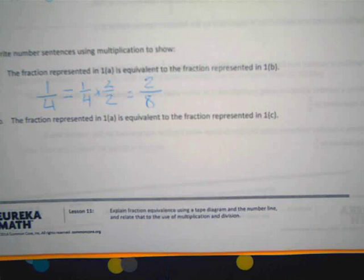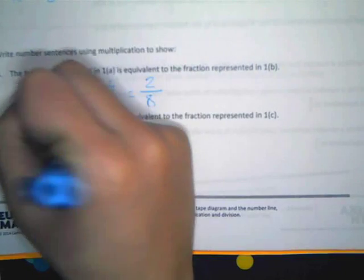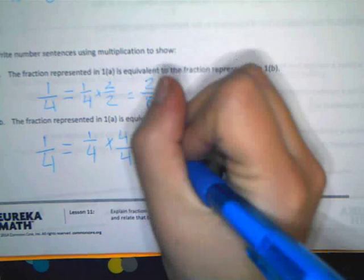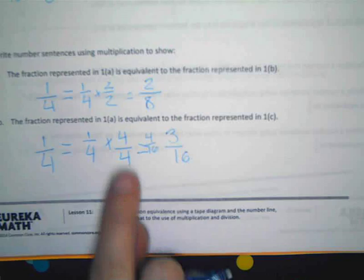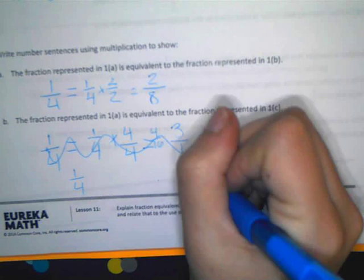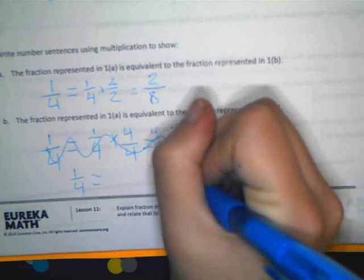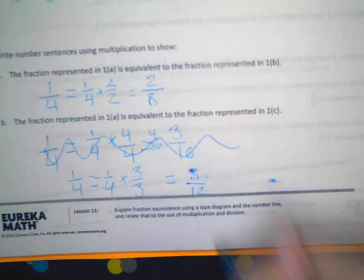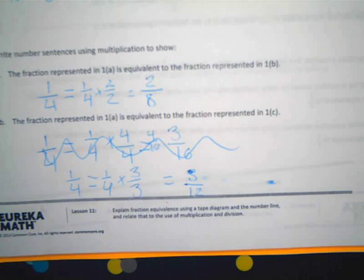What happens from here to here? So I start with one fourth and you said that equals two eighths. So I agree, but how can I prove that right in the middle here? Yeah, we're just going to multiply it times two. I'm going to times top by two and bottom times two, and that gives us two eighths. And this is where it gets tricky because you'll see here in a second. I'm not going to tell you. B, the fraction represented in 1A is equivalent to the fraction represented in 1C.